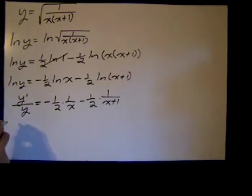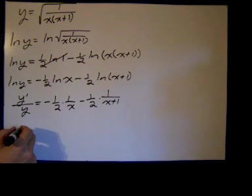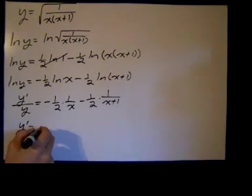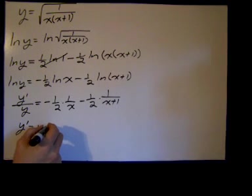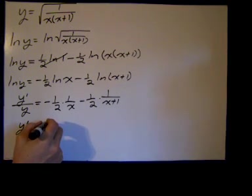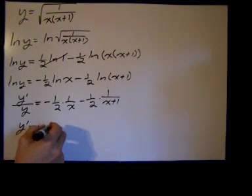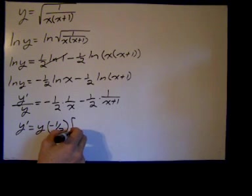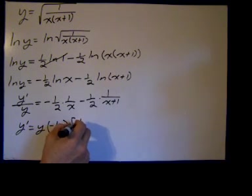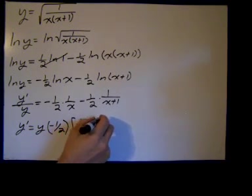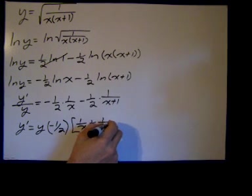Now we multiply both sides by y and we get y prime equals y times, I'm just going to bring that 1 half out in front, negative 1 half times 1 over x plus 1 over x plus 1.